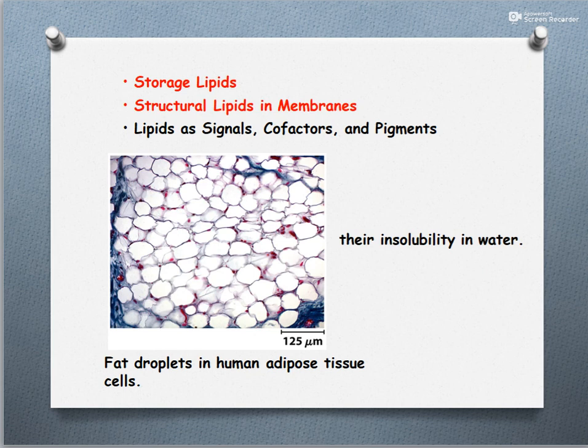Now let us look at the roles of these lipids within the body. They could be of different types: storage lipids, structural lipids as found in membranes, or other functionally active components. For example, lipids are present in signaling, as cofactors, and even in pigments. The core thing to remember is that they are insoluble in water.